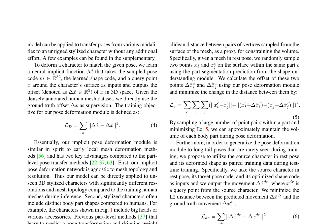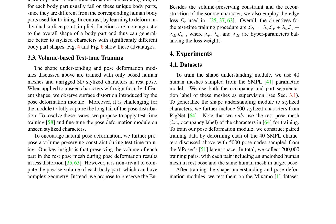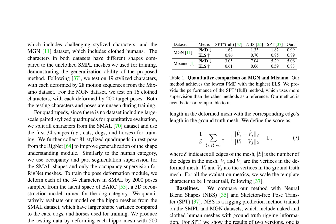The research discusses a novel approach to transfer poses from various modalities to an unrigged stylized character without additional effort. The pose deformation module learns a neural implicit function that takes the sampled pose code, the learned shape code, and a query point around the character's surface as inputs, and outputs the offset of the query point in 3D space. The module is trained with densely annotated human mesh datasets using ground truth offset as supervision, with the training objective defined as the Euclidean distance between the predicted and ground truth offsets.